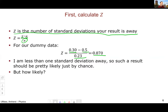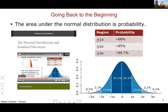That seems pretty likely to happen, but our goal is to quantify it. Knowing how many standard deviations away I am doesn't yet answer the question. To find how likely this is, we go back to the normal distribution and remember that the area under the normal distribution equals the probability. Within one standard deviation from the mean in either direction, that's a probability of 68 percent.